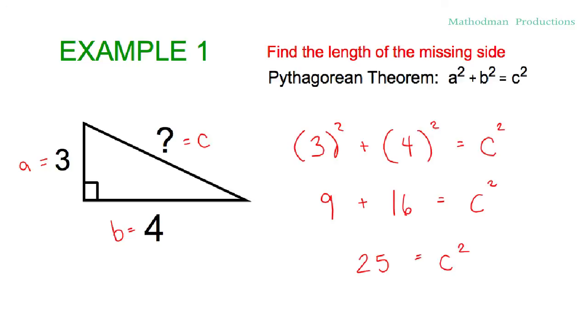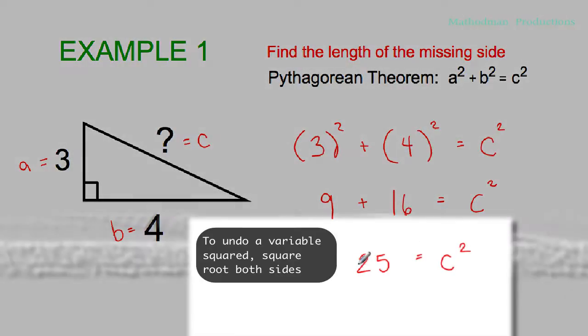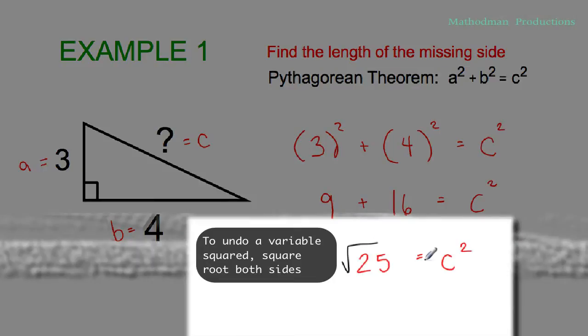And the last thing, the final step, to undo a square, just square root both sides. And you'll get your answer. The square root of twenty-five is five, and the square root of c squared is c. So that missing length, or the hypotenuse, is going to equal five.